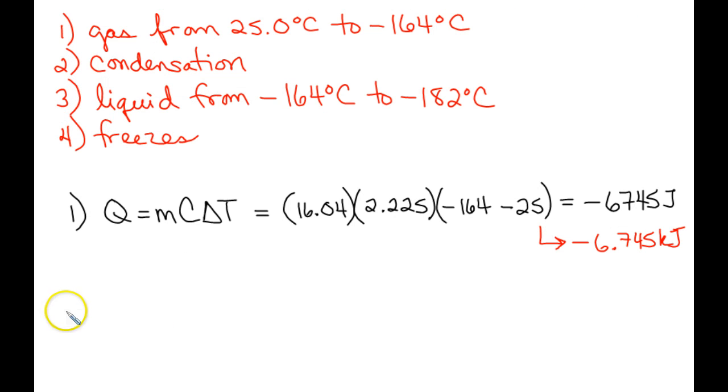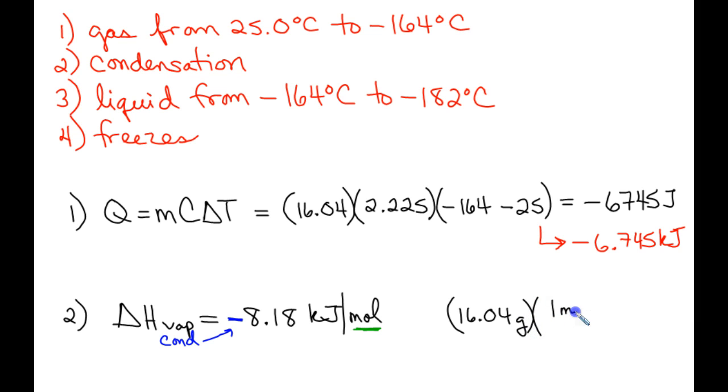For step two, we are going through condensation, which the energy associated with this is the same energy associated with boiling or vaporization. So we have the enthalpy or heat of vaporization, which from our constant list at the top is 8.18 kilojoules per mole. So two things to point out. First, this involves moles. So we've got grams. We need to convert that to moles. And since this is actually cooling, you could call this the heat of condensing. It's going to be negative. Now I specifically chose 16.04 grams as our amount because that's also the molar mass of methane.